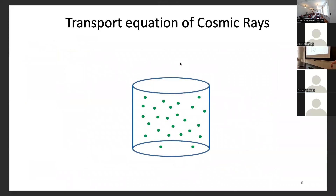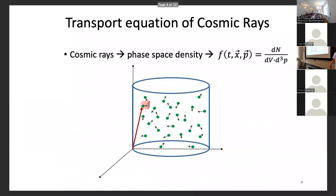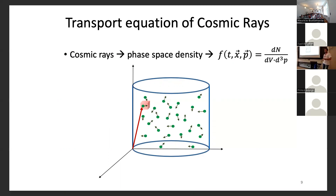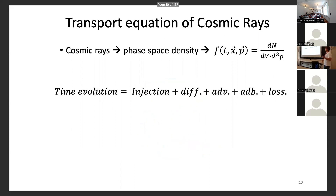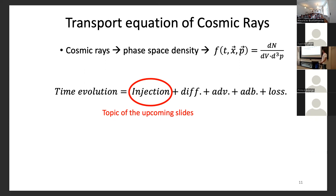Now, how can we model cosmic rays in sources? We need the transport equation, which is based on statistical physics. It describes the phase space density — the number of cosmic rays per unit volume and unit energy or momentum — and tells you how this phase space density evolves as a function of time depending on all the different processes that can affect your cosmic ray population: injection, escape mechanisms such as diffusion and advection, as well as losses.